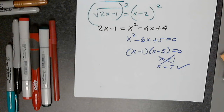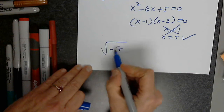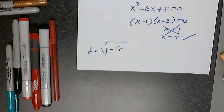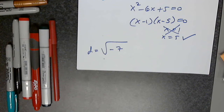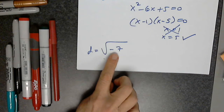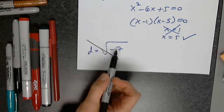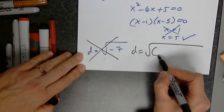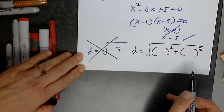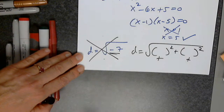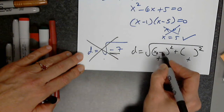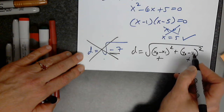I even saw someone write a negative value under the square root for the distance formula. We mentioned that we are under the square root for the distance — we add two positive quantities. When I add two positive quantities, can I ever get negative 7? No. The distance formula is the square root of something squared plus something squared — this is positive, this is positive, I can never get negative 7. So please remember: it's the square root of (x2 minus x1) squared plus (y2 minus y1) squared.